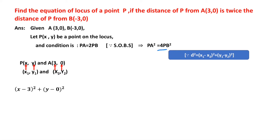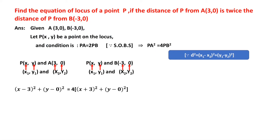This equals 4 times PB². For finding PB², we take P as (x₁, y₁) and B(-3, 0) as (x₂, y₂), substituting in the formula. So PB² = (x - (-3))² + (y - 0)² = (x + 3)² + y².